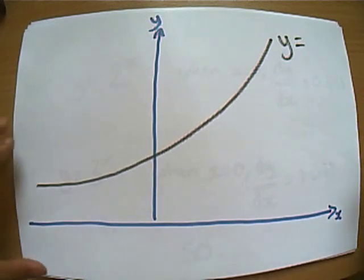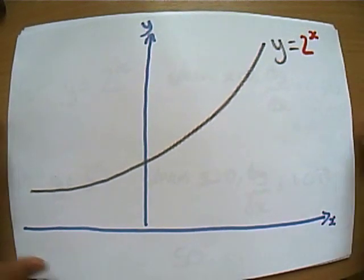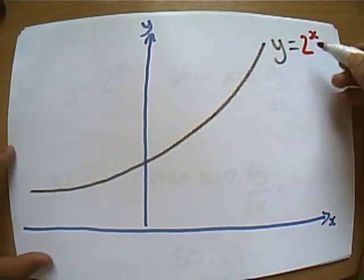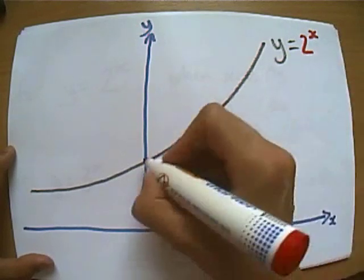And you can imagine a mathematician saying, well, they've all got the same kind of shape. Let's imagine we've got the graph of y equals 2 to the x. What do we know about any kind of power graph, something to the power of x? What do we know when x is 0?